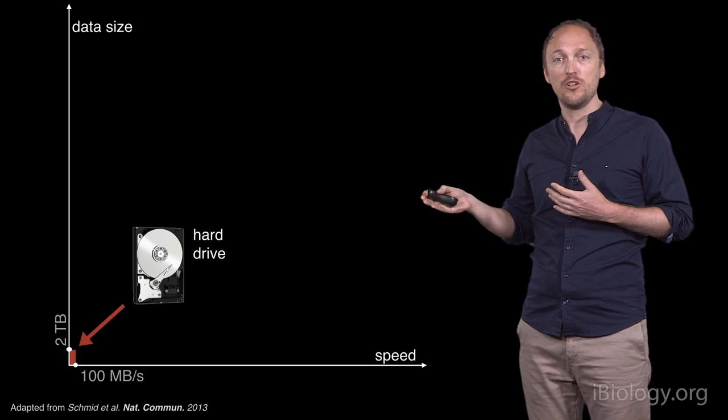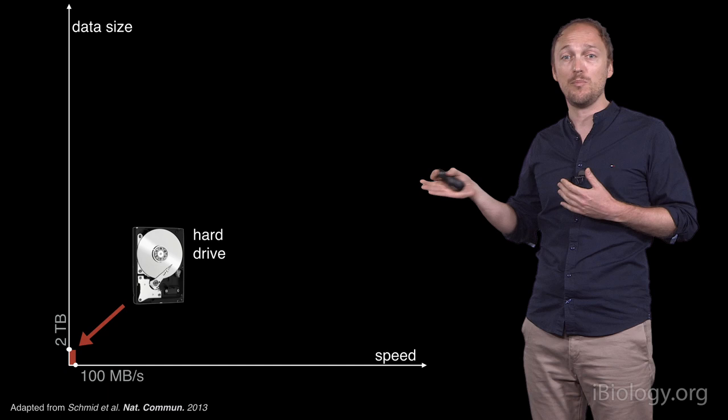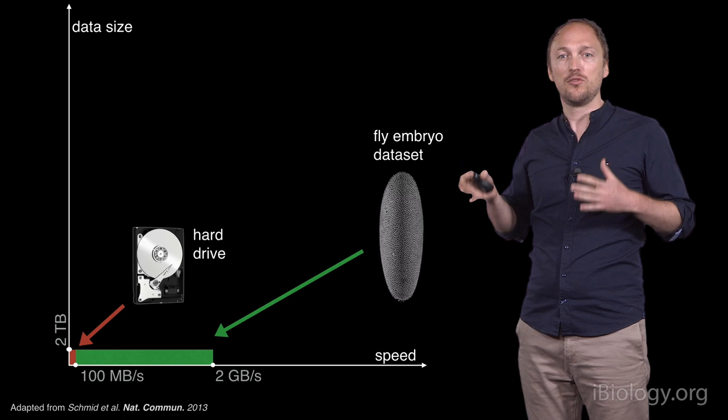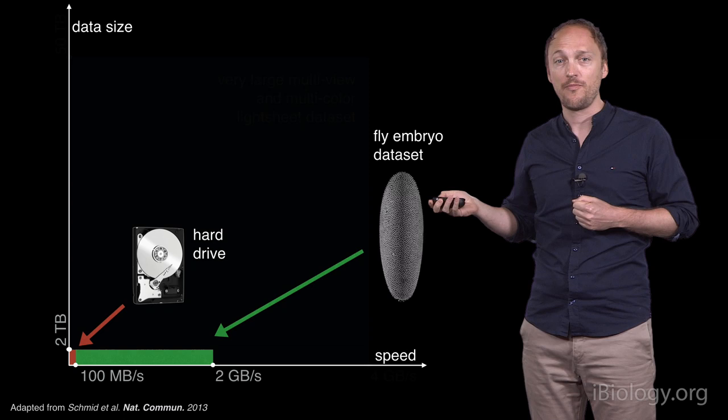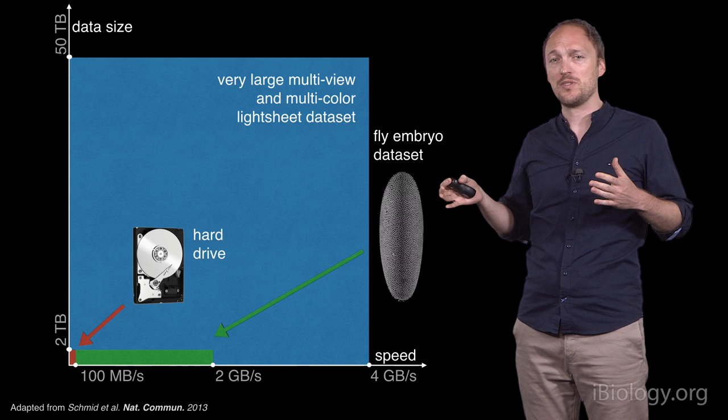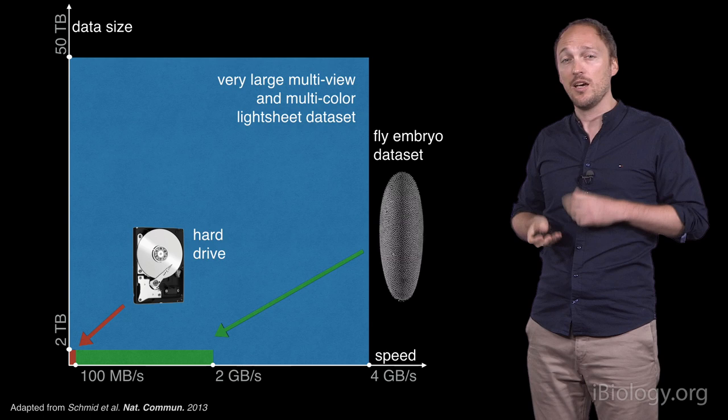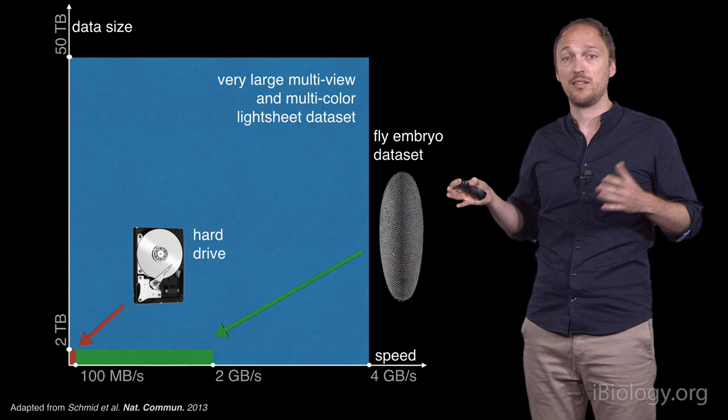For example, you can see that hard disks can typically store 2 terabytes at a speed of 100 megabytes per second. The Drosophila timelapse that I showed you before is 2 terabytes of raw data and is acquired on a microscope that can output 2 gigabytes per second. Faster microscopes exist that can output up to 4 gigabytes per second and produce up to 50 terabytes of data on a single run. The take-home message here is that modern microscopes produce very large amounts of data that pose serious data management challenges.